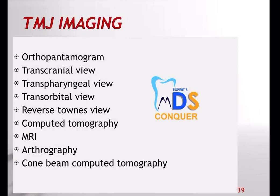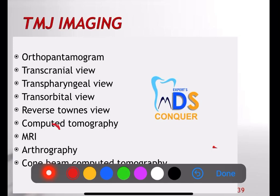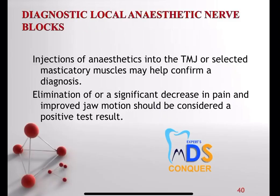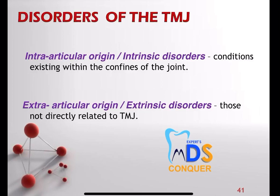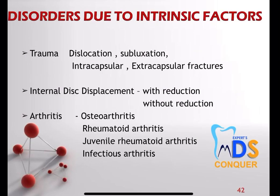For various TMJ imaging modalities, just write the names. If you are an oral medicine student, give a little description of the imaging modalities. For the articular disc specifically, MRI is more useful because it gives a detailed view of the articular disc and soft tissue. You can also mention diagnostic LA nerve blocks and the classification of disorders into intrinsic and extrinsic disorders as an applied aspect.